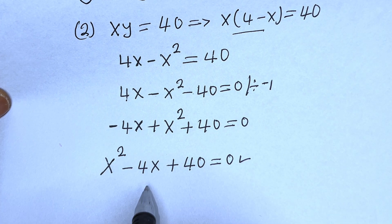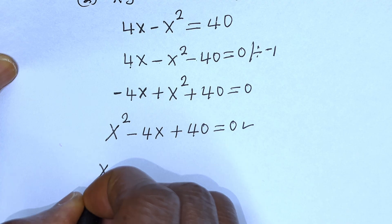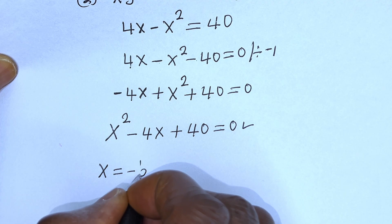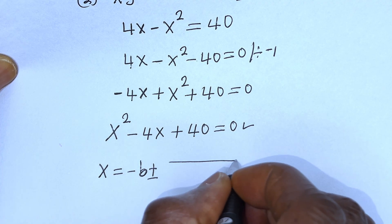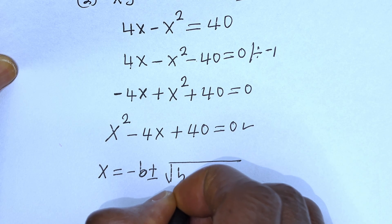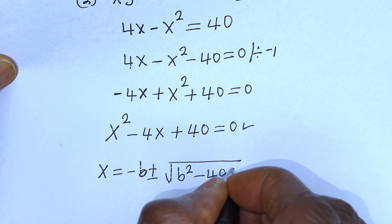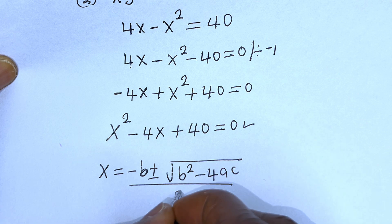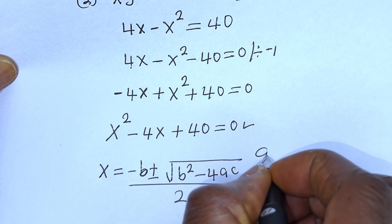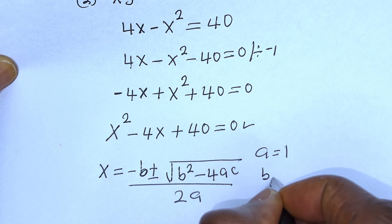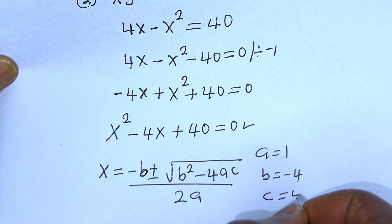This is a quadratic equation. Let us solve this using the quadratic general formula. From the equation, a is equal to 1, b is equal to minus 4, and c is equal to 40.